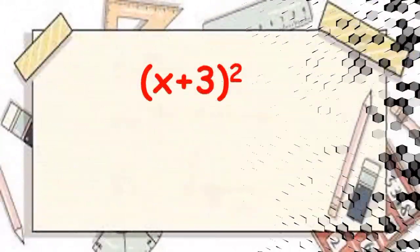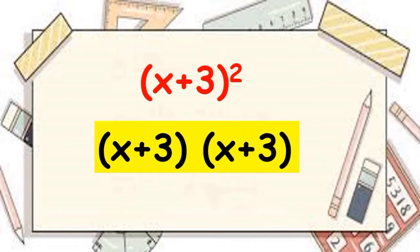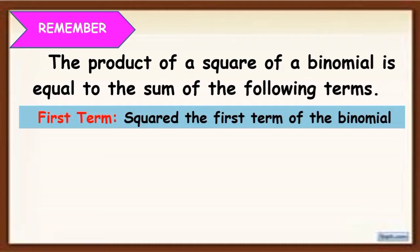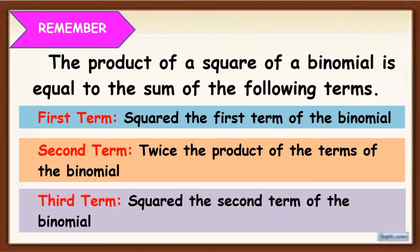This is an example of a square of a binomial. This given is also the same with x plus 3 times x plus 3. Remember, the product of a square of a binomial is equal to the sum of the following terms: first term, squared the first term of a binomial; second term, twice the product of the terms of the binomial; third term, squared the second term of the binomial.